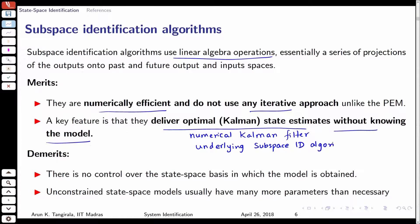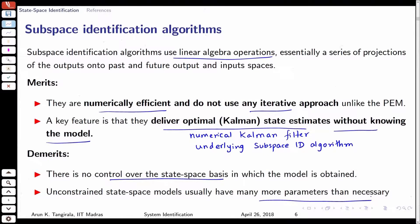The model is implicitly derived from data, so we call these states numerical Kalman states, meaning there is a numerical Kalman filter underlying the subspace ID algorithms. There are demerits of course: there is no control over the state space basis, and it also suffers from the same demerits as non-parametric models in that there are many more unknowns than necessary. For now, let us focus on unconstrained state space models.